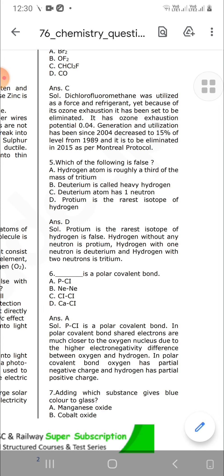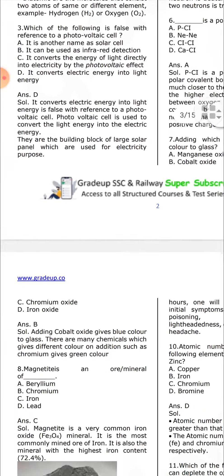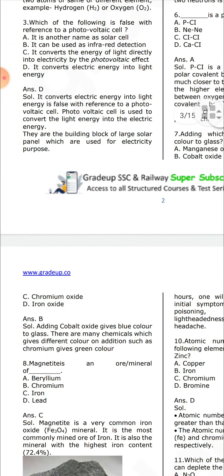Adding which substance gives the blue color to glass? Cobalt oxide. Adding cobalt oxide gives the blue color to glass. There are many chemicals which give different colors upon addition; for example, chromium gives a green color.